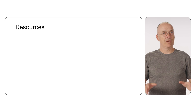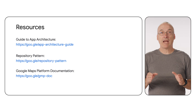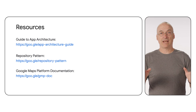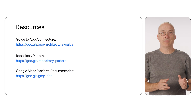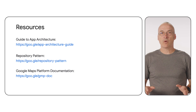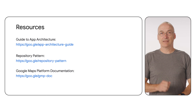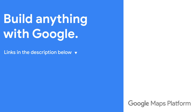A well-architected app is just like a well-oiled machine — smooth, efficient, and ready to tackle any challenge. So layer up your Google Maps apps and unlock their full potential. Check out the official app architecture guide on the Android developer's site, and take full advantage of all the excellent resources created by the Android team. And don't miss out on the Google Maps Platform's Android documentation and Codelabs linked in the description. See you next time.